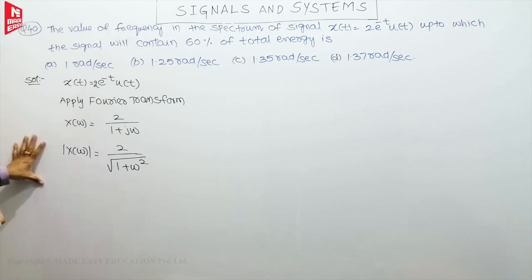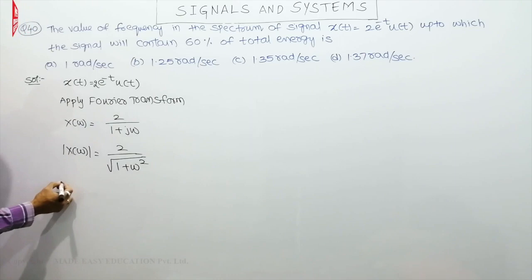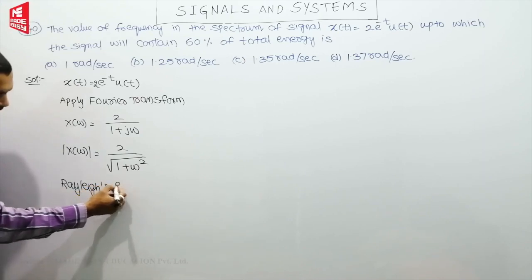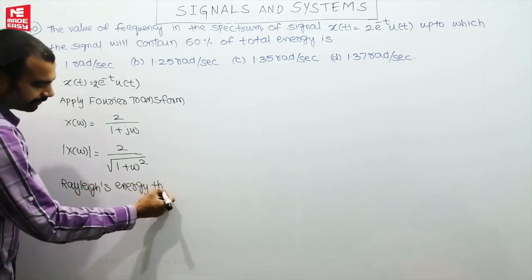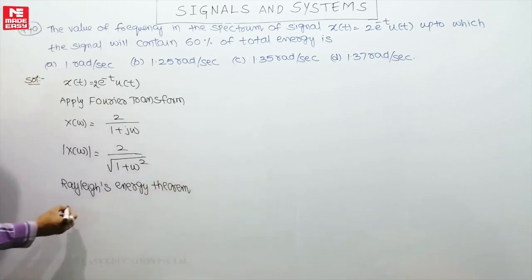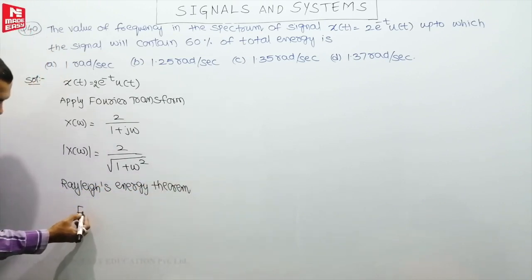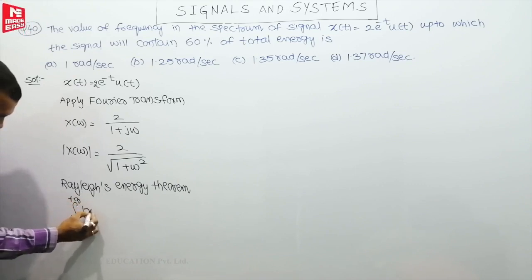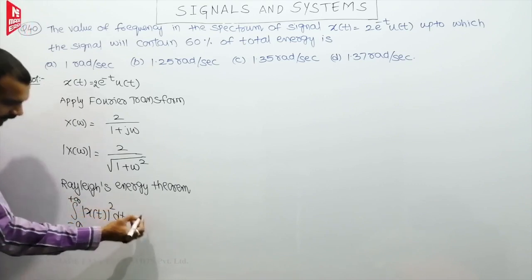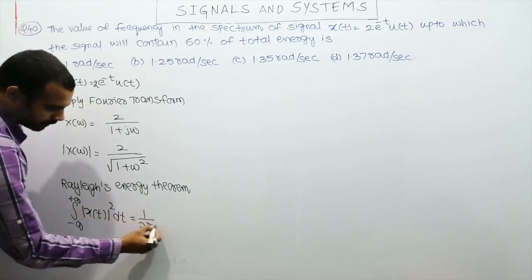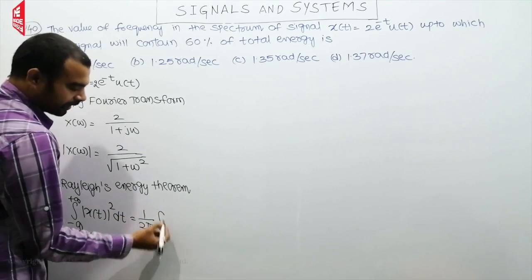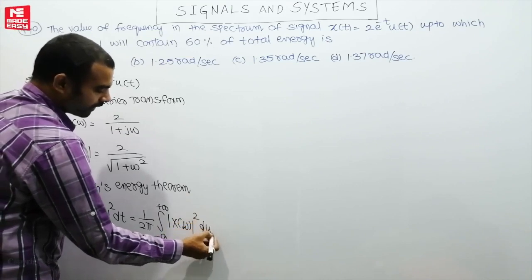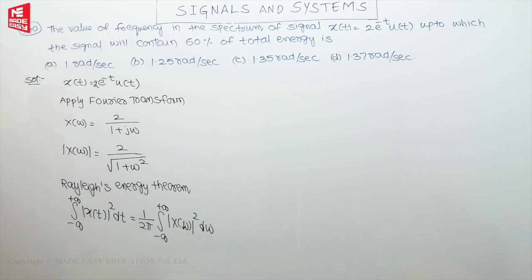Now we need to find the energy. We use Parseval's theorem, also called the Rayleigh energy theorem. The energy is equal to the integral from minus infinity to plus infinity of |x(t)|² dt, which equals (1/2π) times the integral from minus infinity to plus infinity of |X(ω)|² dω.